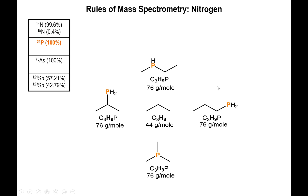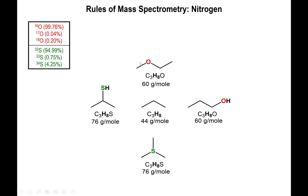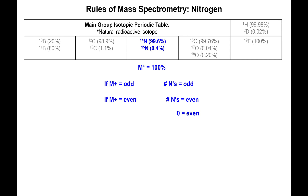If you go from nitrogen down to phosphorus — same group — you might expect an odd molecular mass, but substituting nitrogen with phosphorus gives even numbers. This is because nitrogen's main isotope has an even atomic mass, while phosphorus has an odd atomic mass, making the picture different altogether. For halogens like chlorine or bromine, and for oxygen or sulfur, you also end up with even molecular masses.